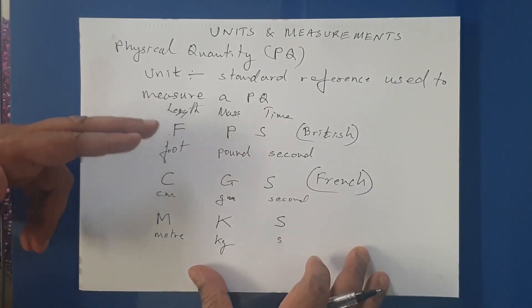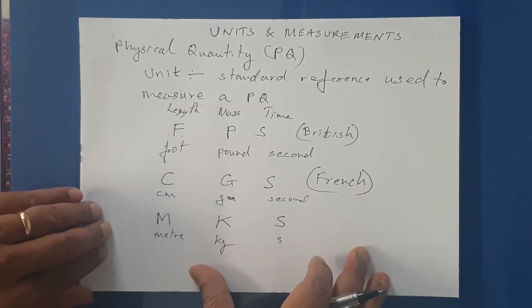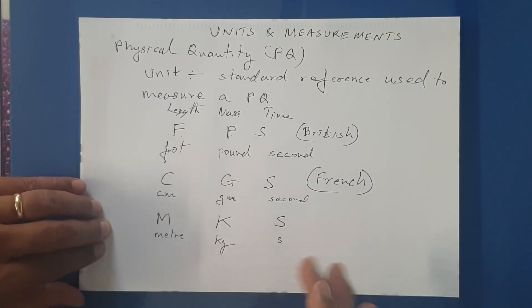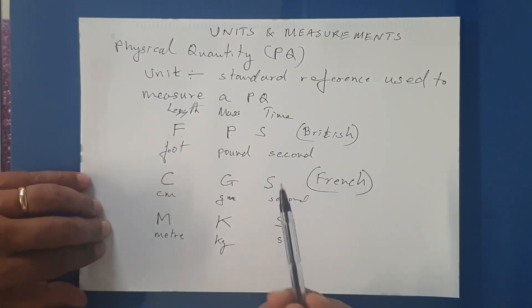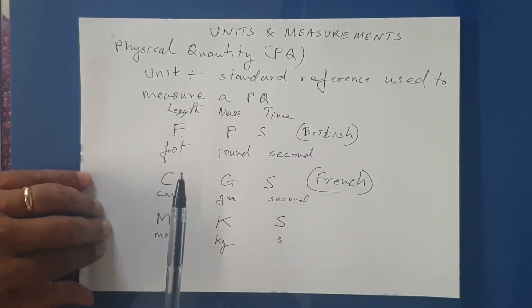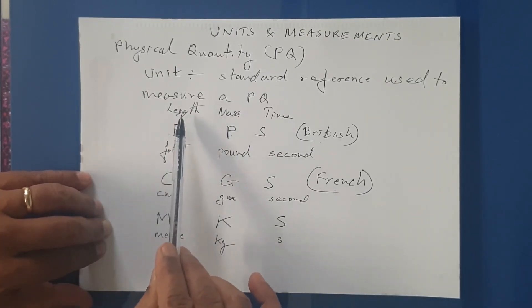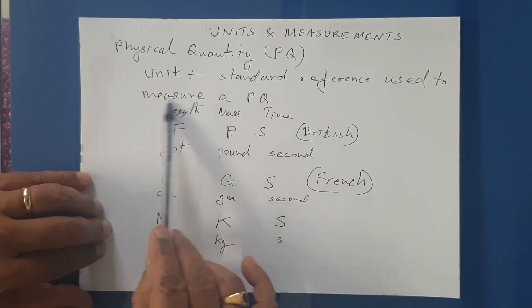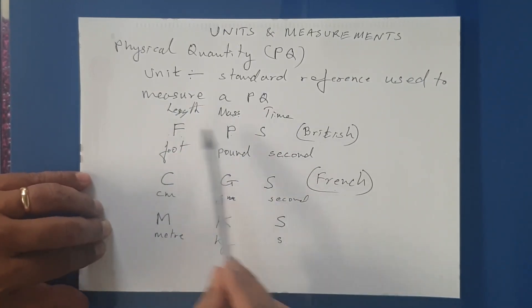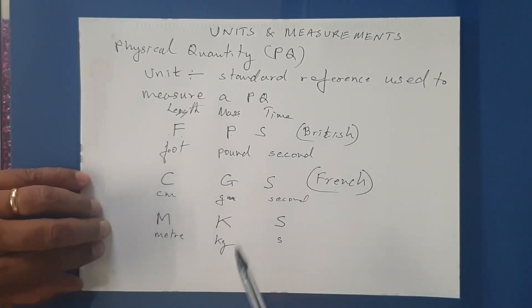These three physical quantities — length, mass, and time — were the fundamental physical quantities, because all other physical quantities were derived from them. For example, speed is distance traveled divided by time, that is length divided by time. Volume is length times breadth times height, that is length cubed. These were called fundamental physical quantities.